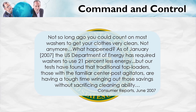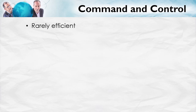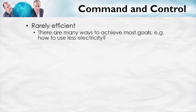Command and control is rarely an efficient way of achieving a goal. Why not? Well, there are many ways to achieve most goals. For example, let's look at some ways we could use less electricity: we could turn down our thermostat, shut the lights off when we leave a room, turn off our computers at night, or use more solar power. Firms, which use a lot of electricity, have many, many different ways to use less by adjusting their production processes.